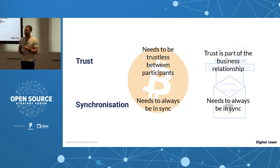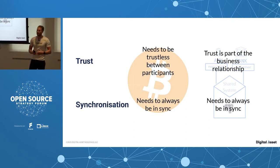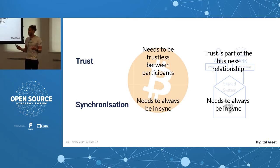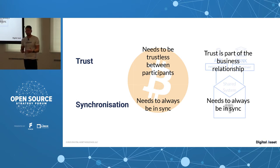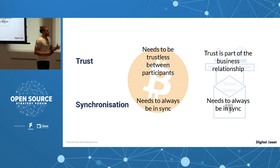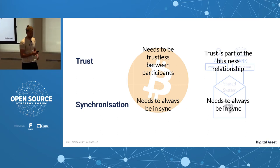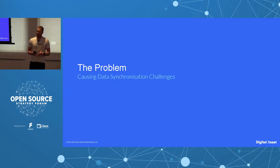In Bitcoin, people transact without necessarily trusting the other party. But in a bank-to-bank relationship, trust is already there — based on regulations or economic incentives — so you don't need network rules to establish trust. What's interesting is that both Bitcoin and banking relationships need data synchronization. That's the more important challenge to solve. So let's look at why data synchronization challenges exist and what causes them.